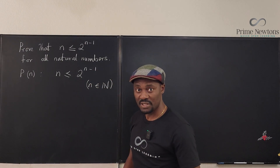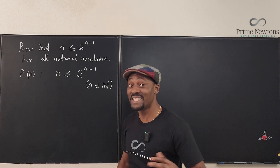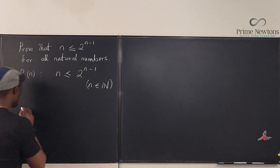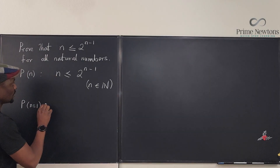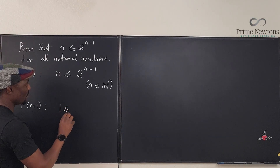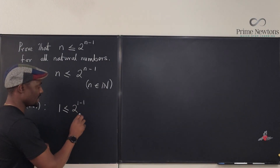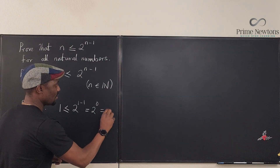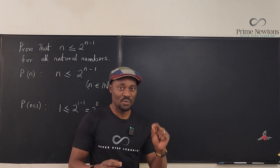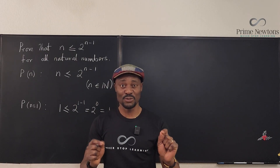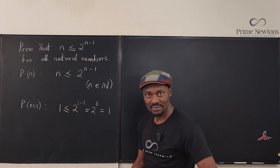The first step is to test. Let's start from the smallest number, because the smallest number is the easiest to test. We test the proposition for n equals 1. If n equals 1, we have 1 is less than or equal to 2 raised to power 1 minus 1, which is 2 raised to power 0, which equals 1. So 1 is less than or equal to 1. As a logical statement, whenever you have 'or,' you only need one part to be true — and 1 equals 1, so that's true.